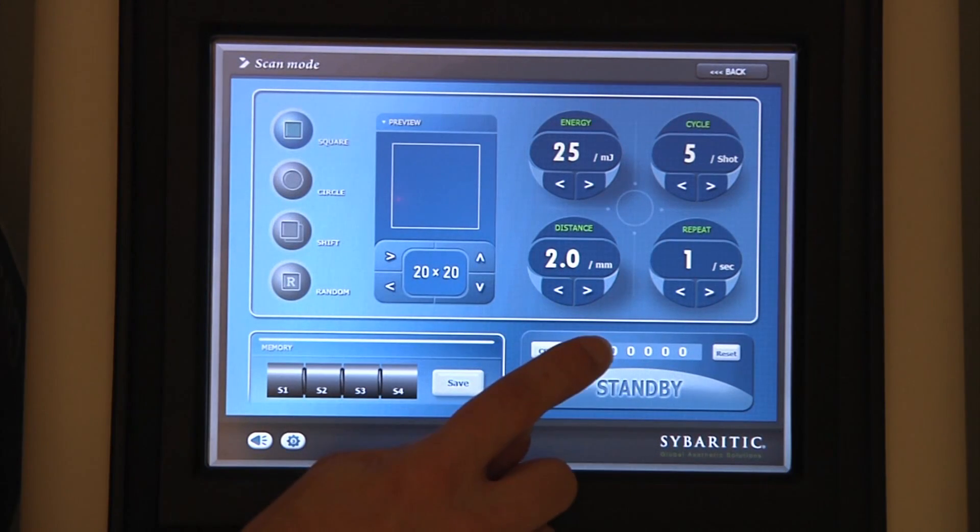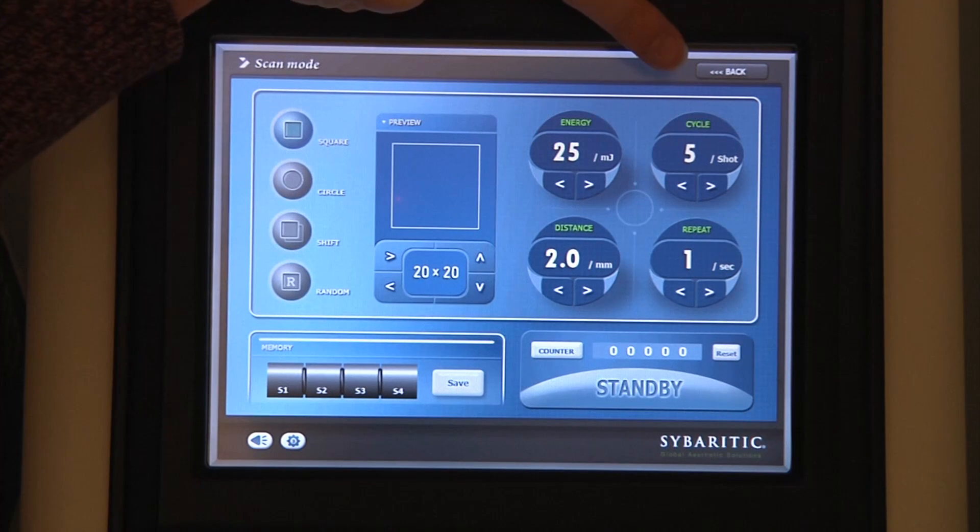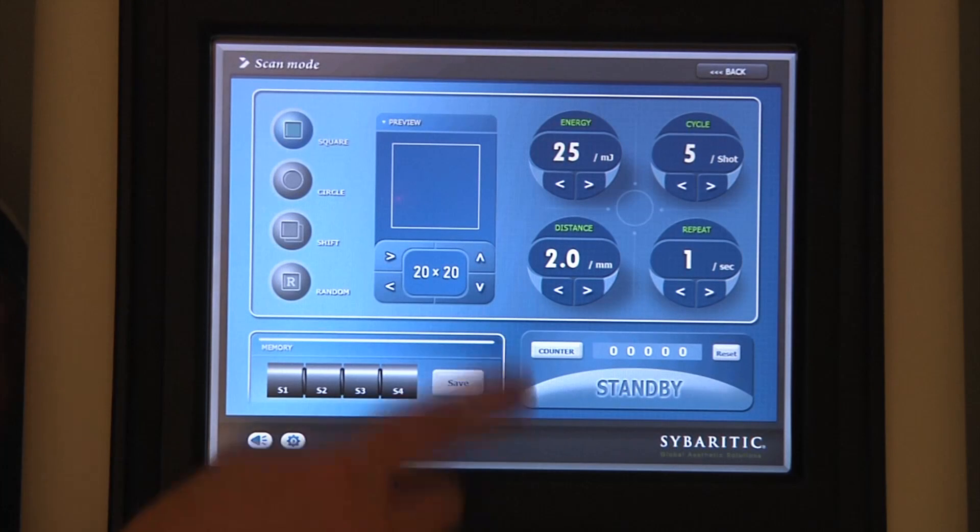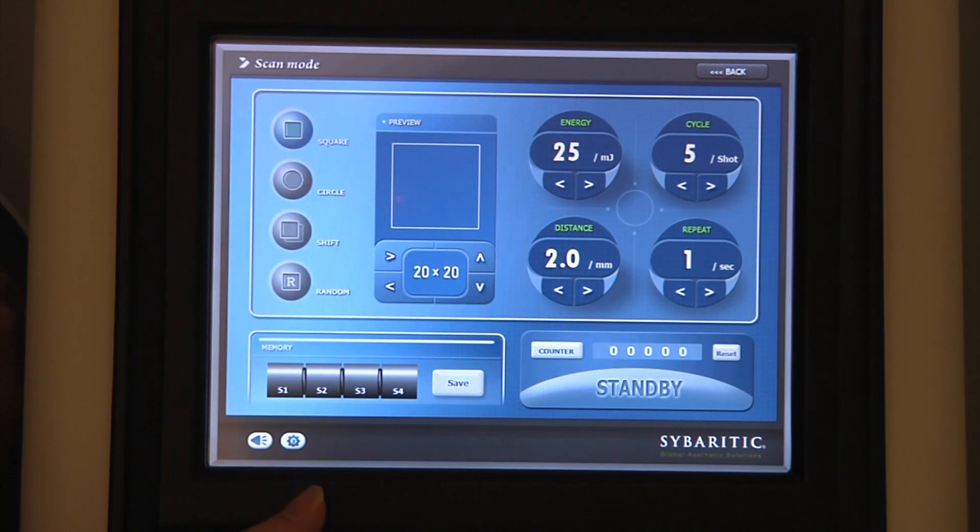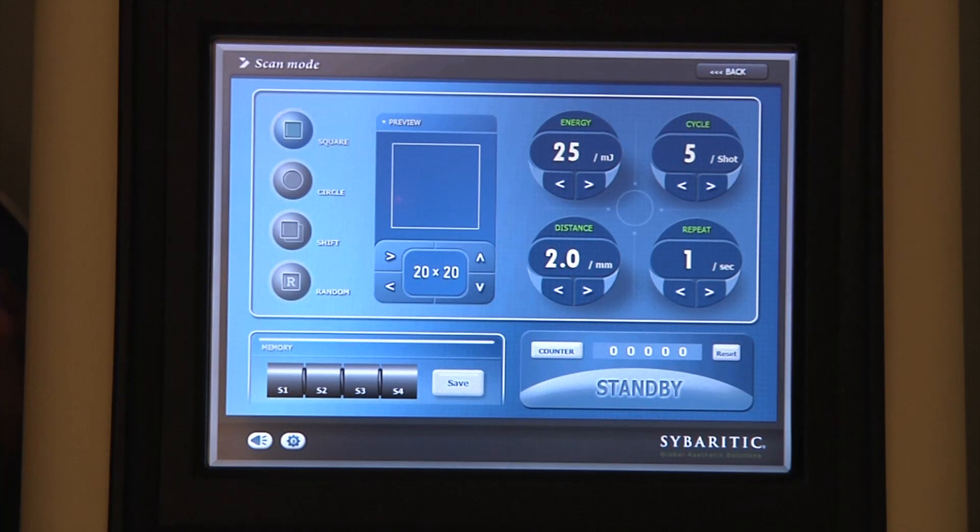Over here, we have the energy control. We can adjust the energy from 15 millijoules up to 25 millijoules. We can also control the cycling from 1 to 5. The distance indicates the distance between individual microthermal zones, which we can set as tight as 400 microns or as wide as 2,000 microns or 2 millimeters. The repeat mode is essentially our cycling frequency, which we can adjust from 1 to 3 cycles per second.